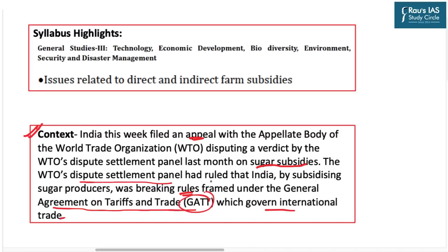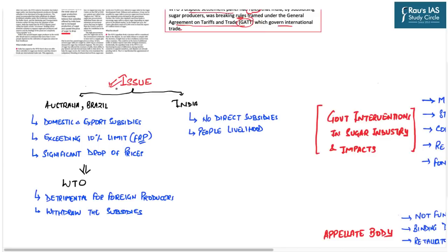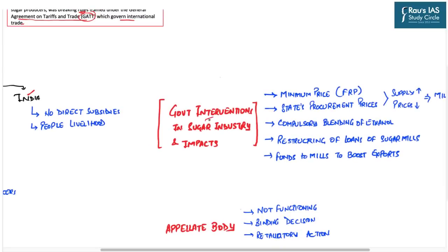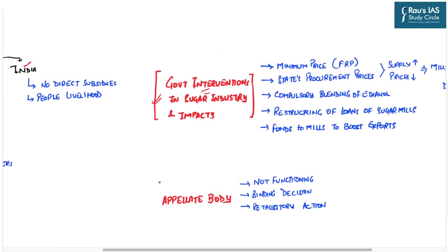India has challenged this ruling by the WTO dispute settlement panel in the WTO's appellate body. This topic falls under General Studies Paper 3 — Economic Development — specifically the micro section of issues related to direct and indirect farm subsidies. We will discuss the present issue between these countries and India, the WTO's ruling, various government interventions in the sugar industry, and the future course of action regarding the appellate body.